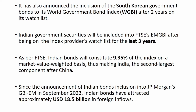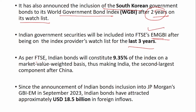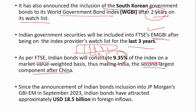FTSE Russell also announced the inclusion of South Korean government bonds in its World Government Bond Index after two years on its watchlist. For India, it was three years on the watchlist before inclusion in the FTSE EMGBI index. As per FTSE, Indian bonds will constitute 9.35% of the index on a market value-weighted basis, making India the second largest component after China.